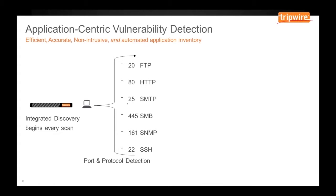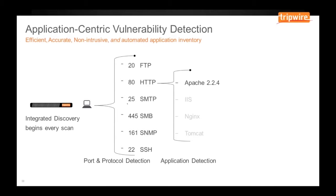If Tripwire IP360 finds port 80, it will look for the HTTP protocol to verify that the web service is actually present. Once it confirms that a web service is present, it will identify the underlying web service providing the service. In this example, Tripwire IP360 found that Apache 2.2.4 was present on the host.